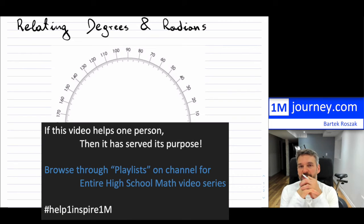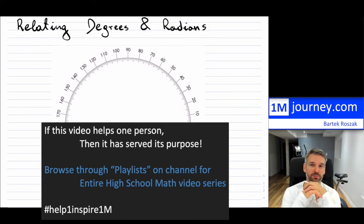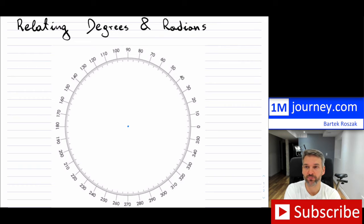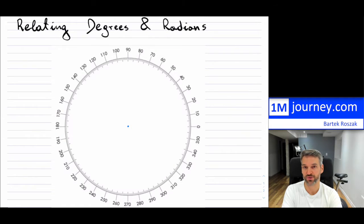At some point in math, most likely in grade 11, maybe even earlier depending on your teachers and what you're studying, you're going to run into the problem of trying to take degree measurements of angles and then relating them back to radians.